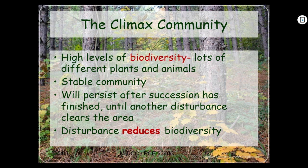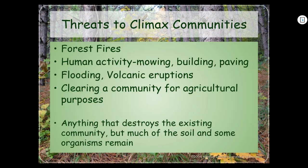Disturbance reduces biodiversity. You have all these living things — grasses, flowers, trees, insects, squirrels, birds, foxes, wolves — settled in the climax community, and then a disturbance like fire or a volcano reduces all of that. Threats to climax communities include forest fires, human activity like mowing, building, and paving, the abandoned cornfield example when they harvest and leave everything to die, flooding, volcanic eruptions, and clearing land for agricultural purposes — anything that destroys the existing community but leaves much of the soil and some organisms.